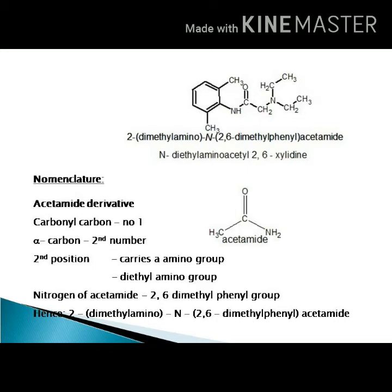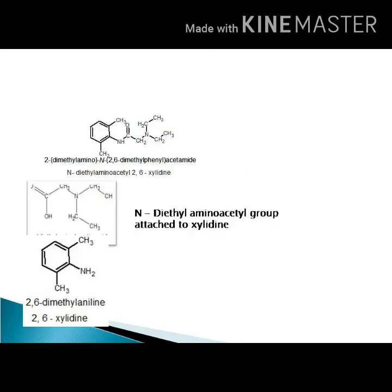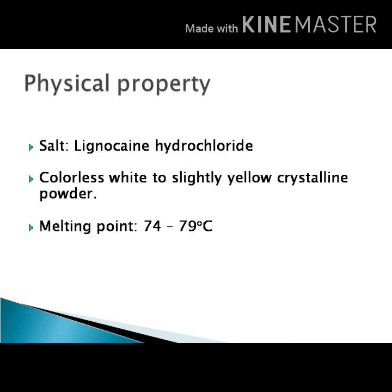That name can be expressed in two ways: either as an acetamide derivative or as a xylidine derivative. As an acetamide derivative, acetamide is the parent compound, the alpha carbon carries a nitrogen with two diethyl groups — giving 2-diethylamino-N-(2,6-dimethylphenyl)acetamide. Alternatively, as a xylidine derivative, the N-diethylaminoacetyl group is attached to xylidine, giving N-diethylaminoacetyl 2,6-xylidine.